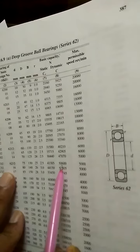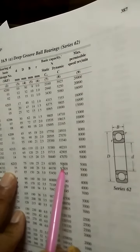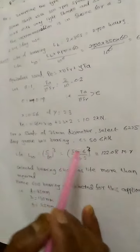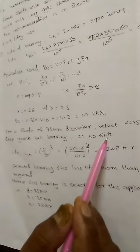Then it will have dynamic load rating as 50.6 kilonewton. Therefore, I select that bearing for 75mm diameter as 6215, having a C as 50.6 kilonewton.